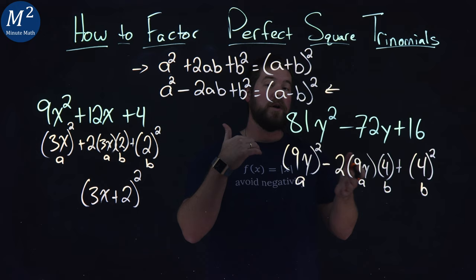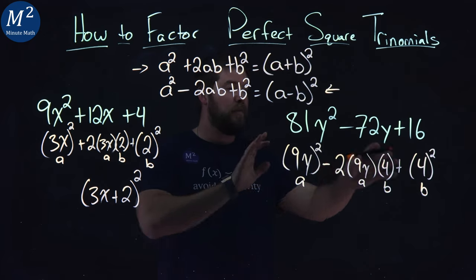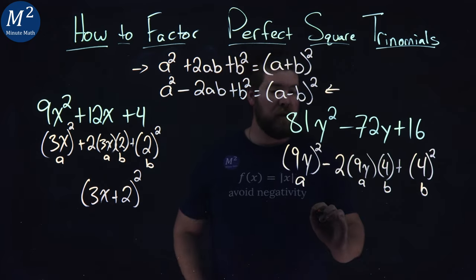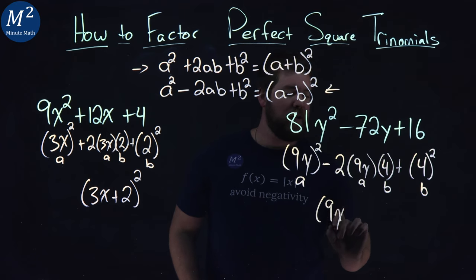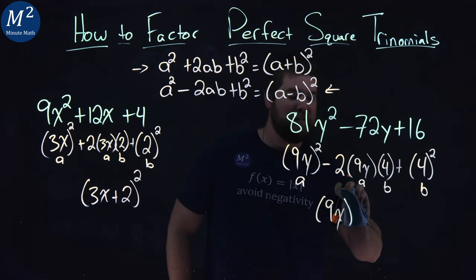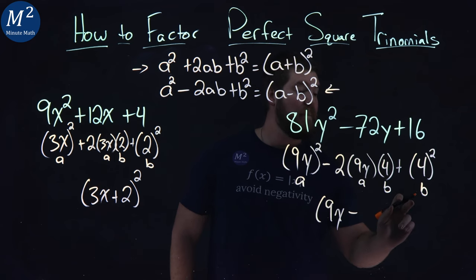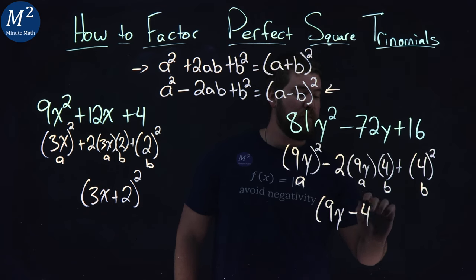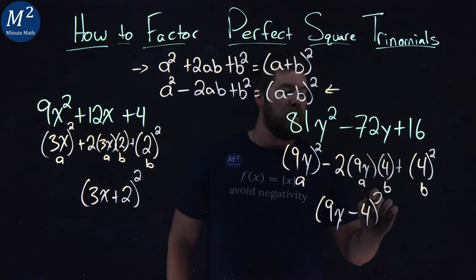And so now we can rewrite this using our formula. Our a value is 9y, so we have 9y. Minus our b value, which is a positive 4, with a minus sign, all squared.